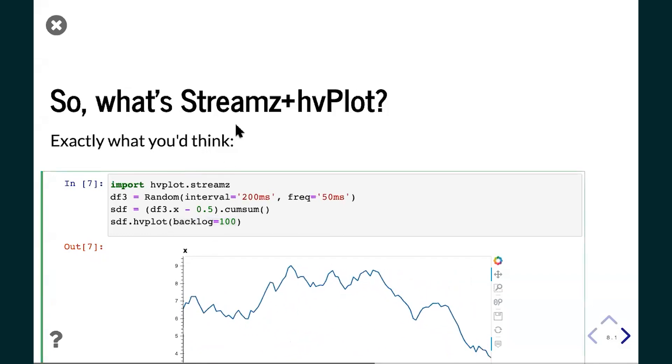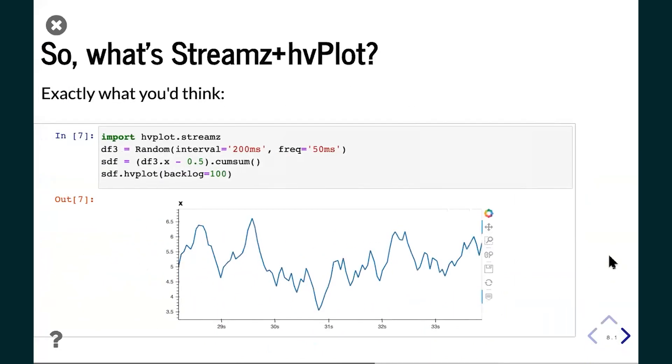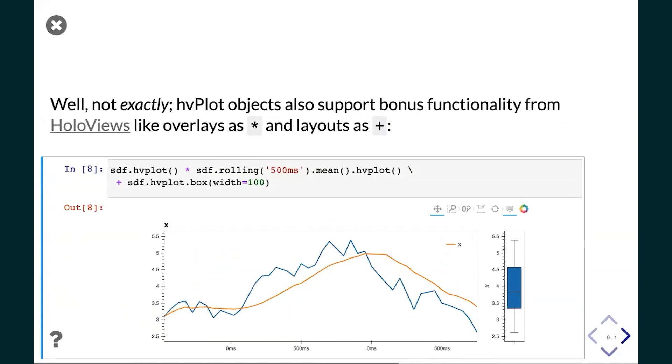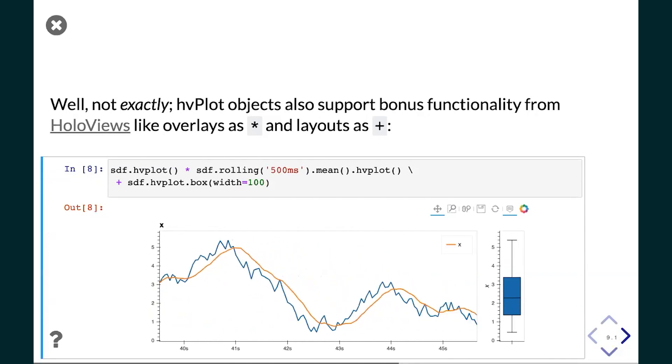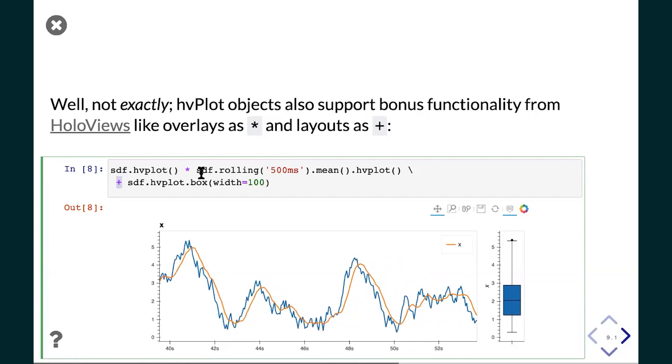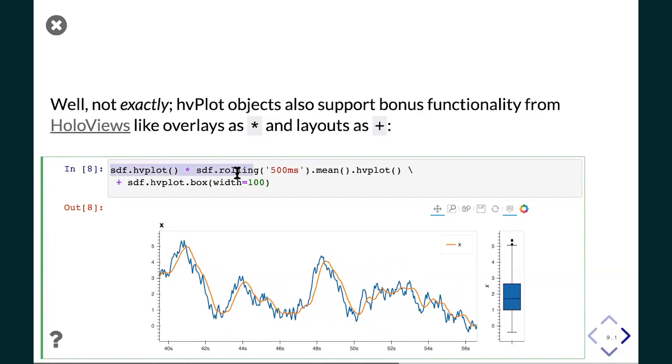So a plot like this can sit there running and not fill up memory. You don't have to use a backlog, but if you do, then that lets this be an ongoing safe thing to keep running because it won't be accumulating data forever. Anyway, that's the only thing that's specific to Streamz about this. Otherwise it's just .hvplot, which you could use on Pandas, xarray, Dask, lots of other objects. Here we're using it on a Streamz object, and so we get a streaming plot.